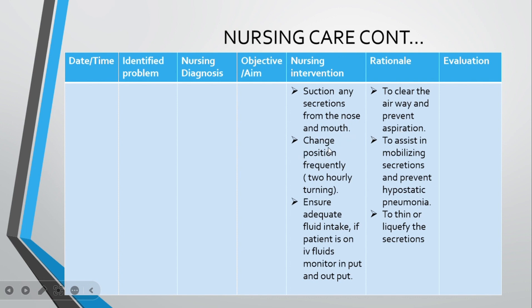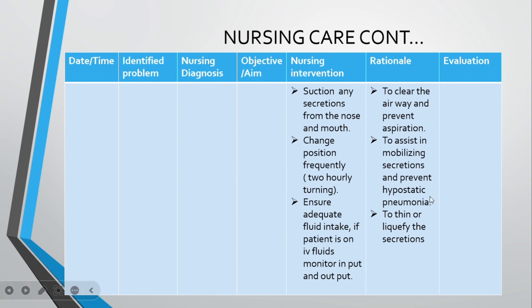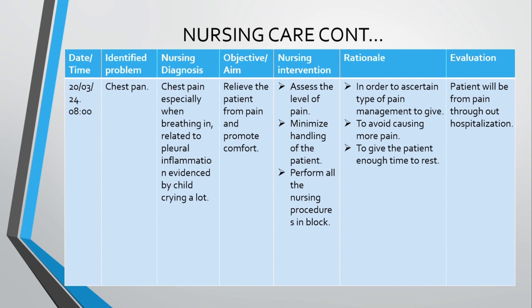The fourth intervention is to change the patient's position frequently, for example every two hours, to assist in mobilizing secretions and prevent hypostatic pneumonia — a form of pneumonia that can develop if a patient is immobile. The fifth intervention is to ensure adequate fluid intake, and if the patient is on IV fluids, monitor input and output to help liquefy secretions so they can be easily expectorated.